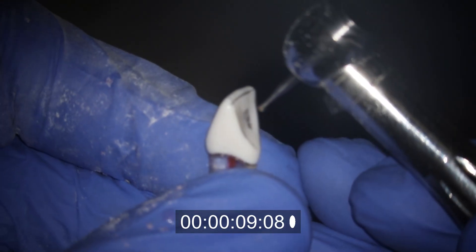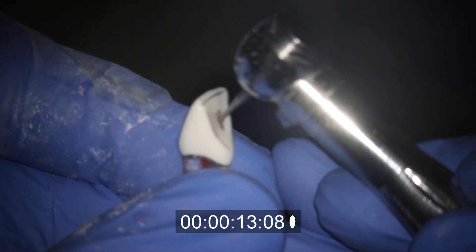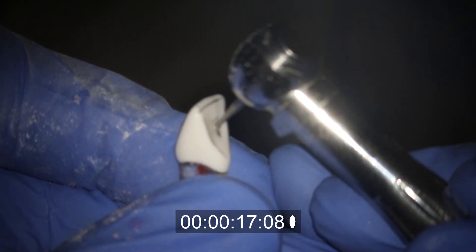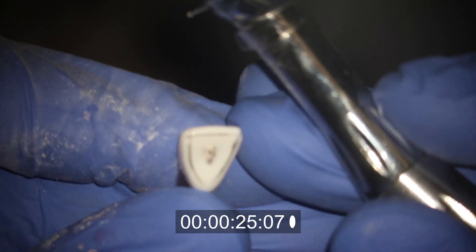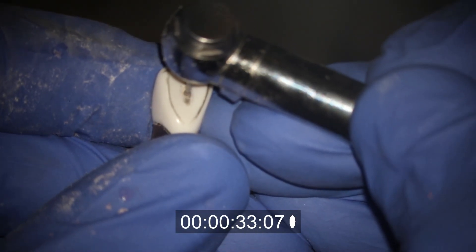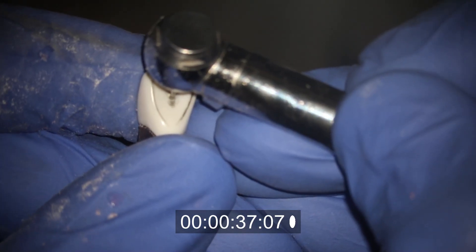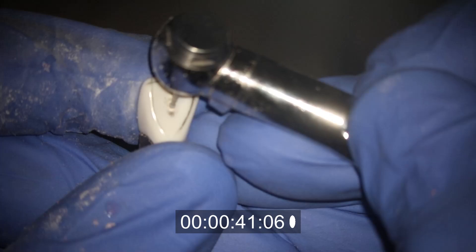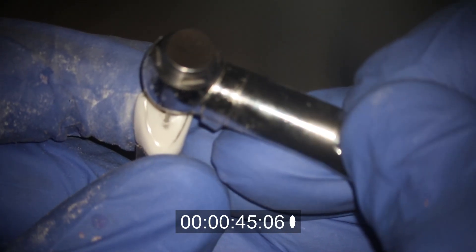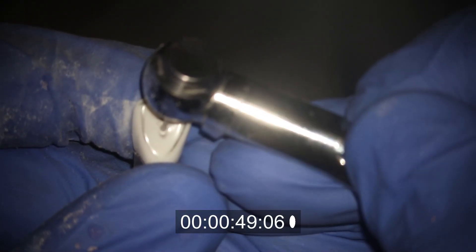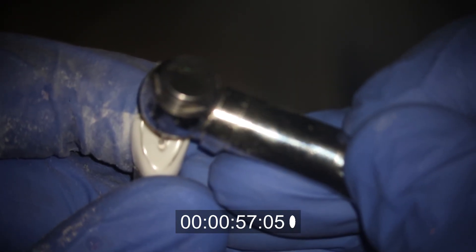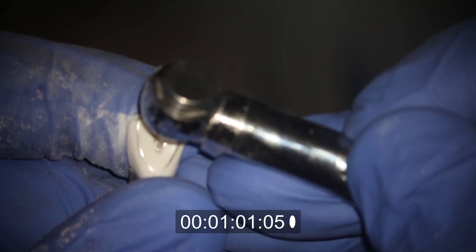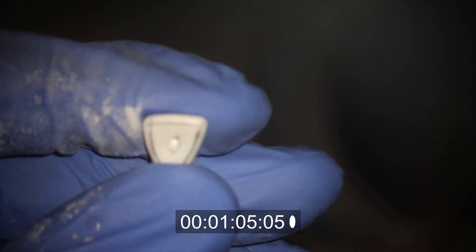So here we're just going to use a two round burr at first to kind of start our access. And then you can see that little drop into the roof of the pulp chamber at that point. So from there I'll keep going ahead and start to make a rough outline of my shape, probably about 75% of what I imagine ending up as.